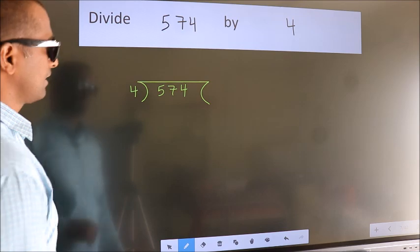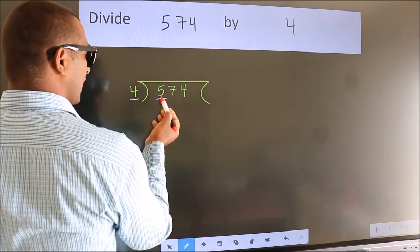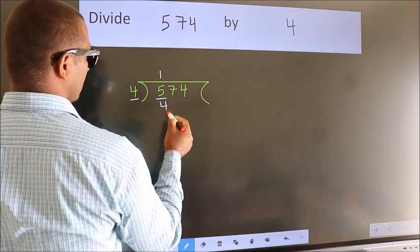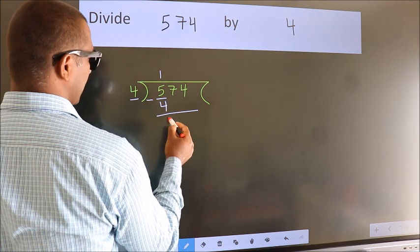Next. Here we have 5, here 4. A number close to 5 in the 4 table is 4 ones 4. Now we subtract. We get 1.